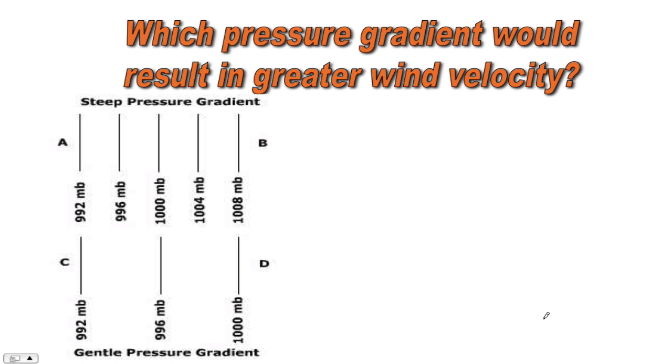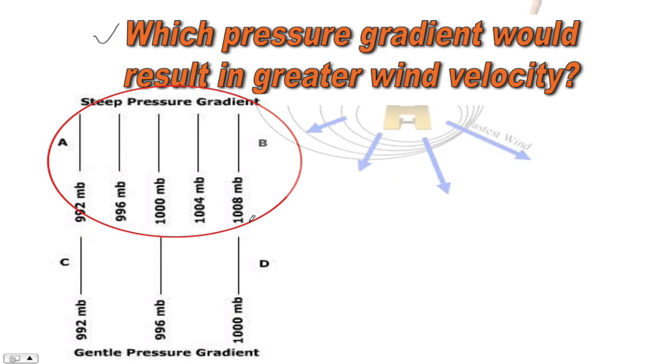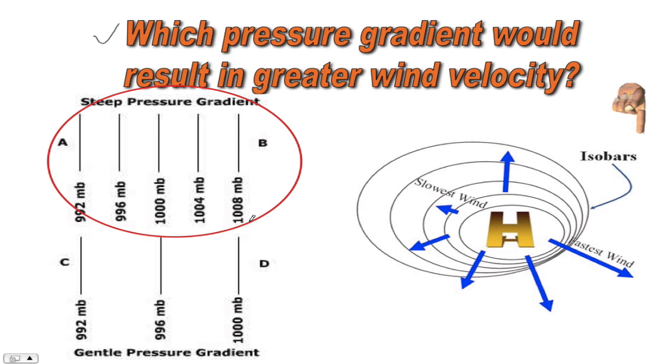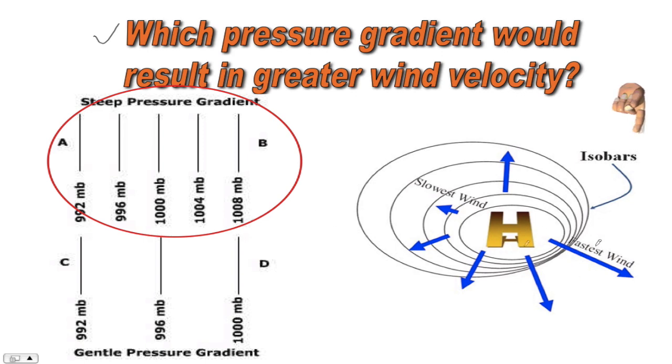So, again, pause the video. I want you guys to answer this question right here. Which pressure gradient would result in greater wind velocity? Is it from A to B or C to D? Pause the video. Write your answer down in your notes. So, from location A to B, the isobar lines are closer than from C to D, which means that the wind should be faster from A to B. Now, you can really see this in the bottom right-hand side of this high pressure system. Right about here. Those isobar lines are very, very close compared to these guys way out here. So, the wind speed is fastest here. Slowest over here.